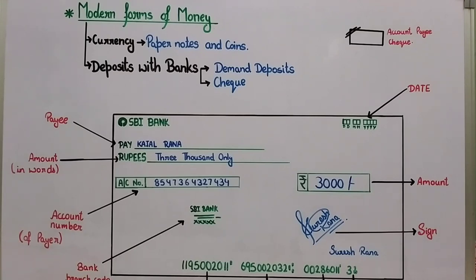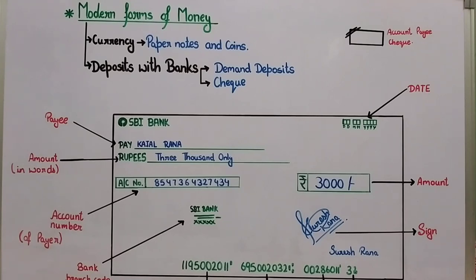Demand Deposits have the same important feature as money — they act as a medium of exchange. In today's time, we are responsible for online banking and we do a lot of transactions and payments. If money is in our bank account, we can directly make payments by sitting at home using UPI, Google Pay, PhonePe, and Paytm. There are many options available to us. You don't even have to use e-banking; you don't have to pay in cash.